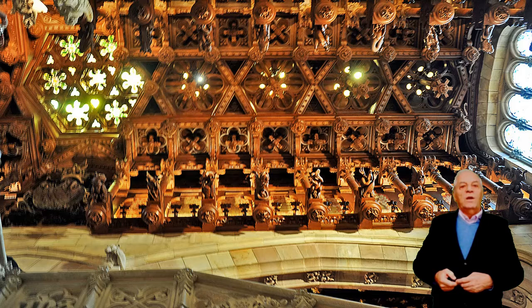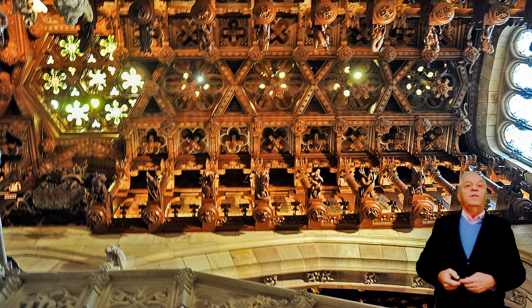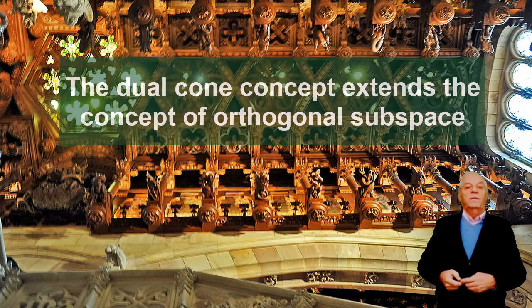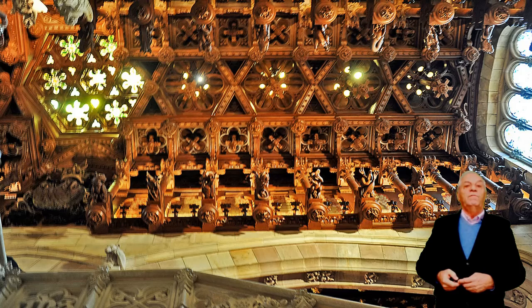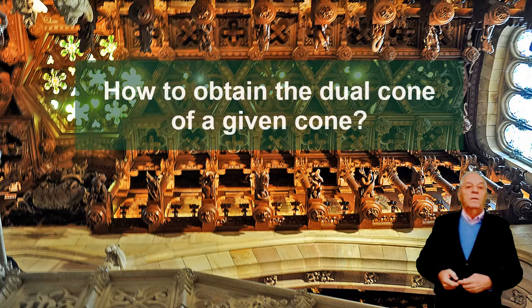It is easy to prove that the dual of the dual is the initial or primal cone — this is a useful property. Since the dual cone of a vector space is its orthogonal subspace, the dual cone extends the concept of orthogonal subspace to a more general and powerful concept. This is the polar or dual cone, and the question we now ask ourselves is: how to obtain the dual cone of a given cone?